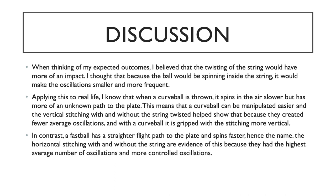When thinking of expected outcomes for this experiment, I thought that twisting the string with either the vertical or horizontal stitching would have more of an impact on the ball because the ball would be spinning faster inside the string and therefore would create smaller, shorter, and more frequent oscillations. We know from real life that when a curveball is thrown it spins slower and has more topspin and more of an unknown flight path because of how far it drops on its path to the plate. A curveball is actually manipulated easier than a fastball because it is less precise in where it's going to land. So the vertical stitching with and without the string being twisted was helpful in showing that, because they both produced fewer average oscillations than either group one or group four which had the horizontal stitching.